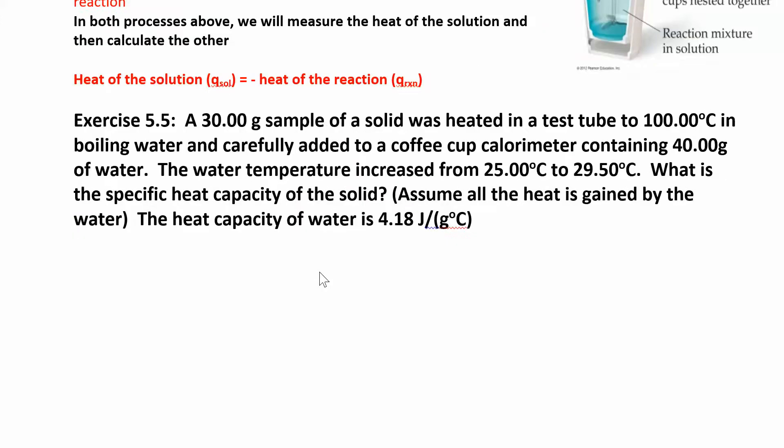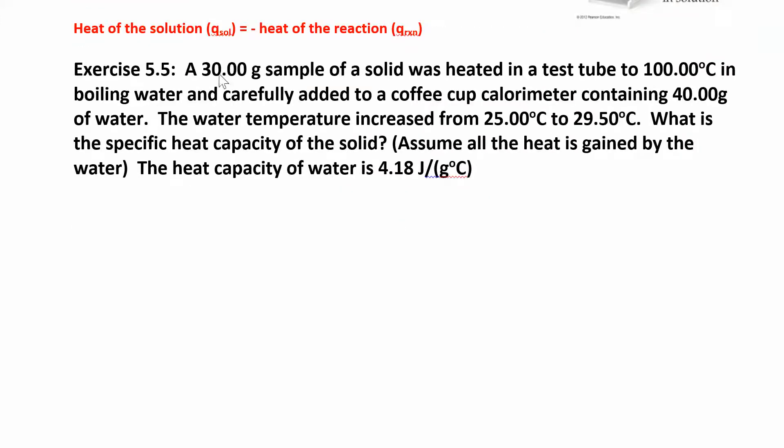This is a simplified form. Imagine you have this situation: you take 30 grams of a solid and heat it in a test tube to 100 degrees Celsius—that's boiling water. Then you add it to the coffee cup calorimeter, and that coffee cup already has 40 grams of colder water. You measure the temperature before and after. The water temperature increases from 25 degrees Celsius to 29.5, so it just goes up a little bit, which makes sense. You're taking this hot solid, you put it in cold water, and the heat from the solid is going to be released into the water.